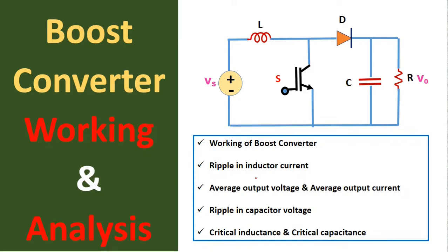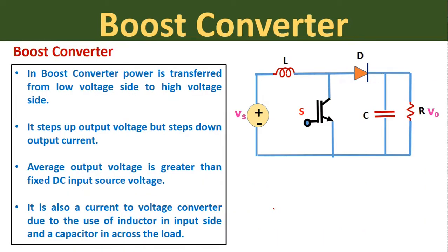Let us quickly see what are the contents we are going to discuss in this lecture. First is working of boost converter, second is ripple in inductor current, third is average output voltage and average output current, fourth is ripple in capacitor voltage, and fifth is critical inductance and critical capacitance of boost converter.